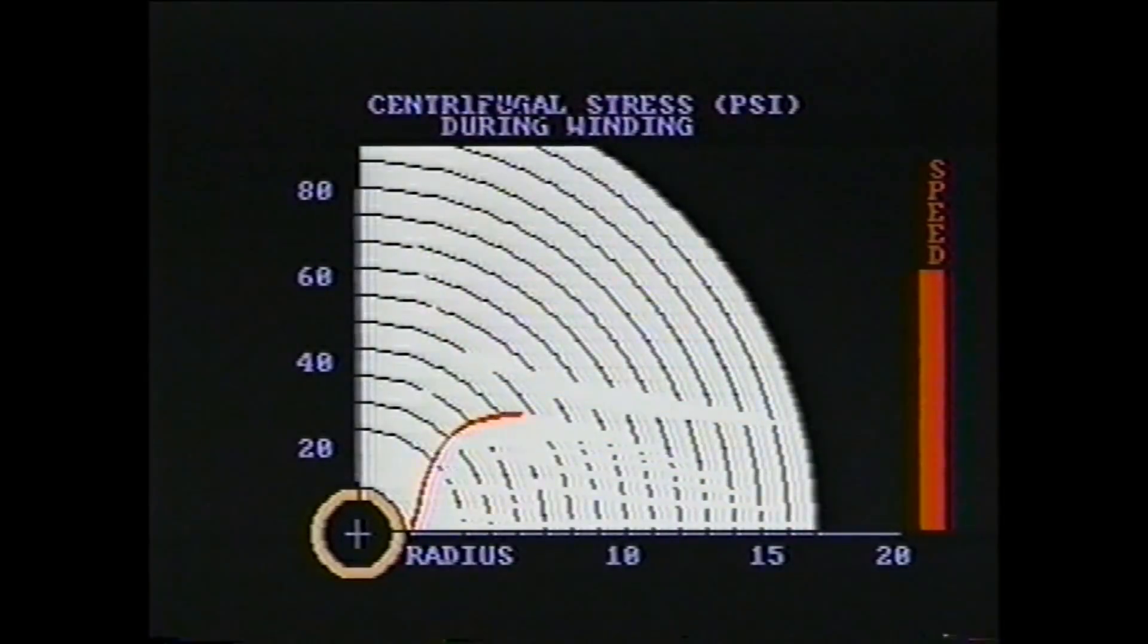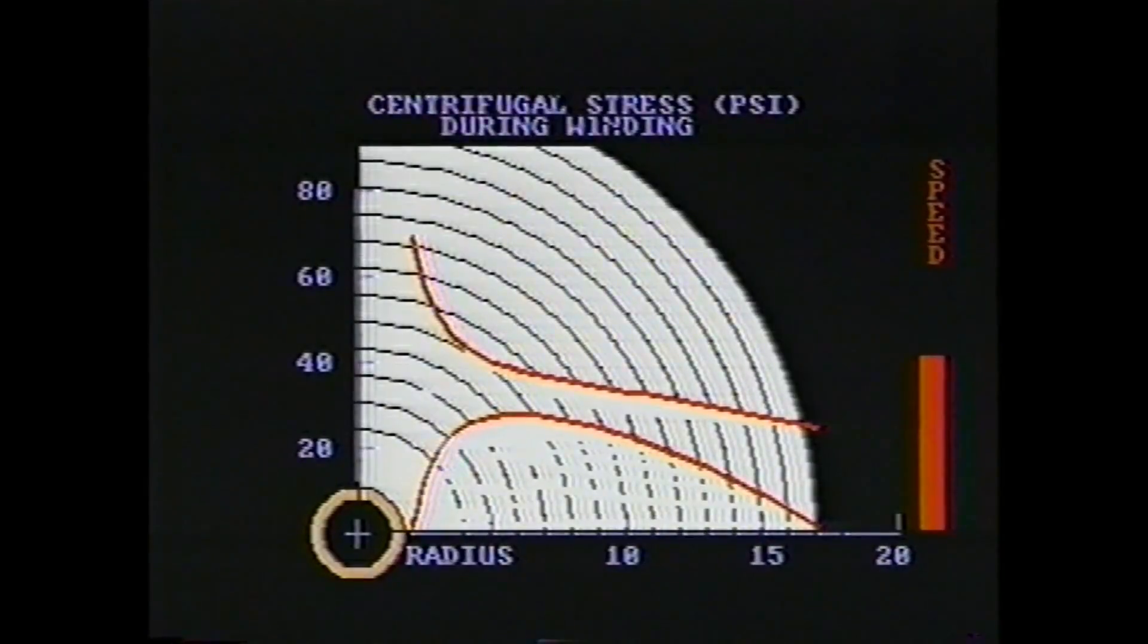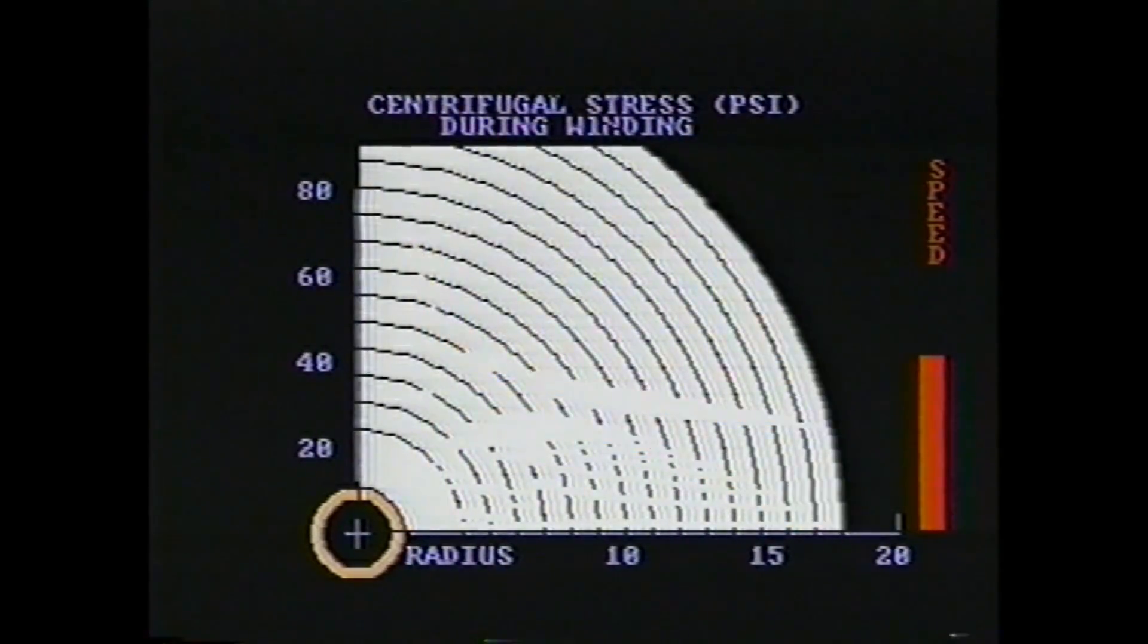As the winder slows down to a stop, the centrifugal stresses are reduced to zero. The net effect of centrifugal stresses is the tendency to decrease tension during run and increase tension after the winder is stopped.